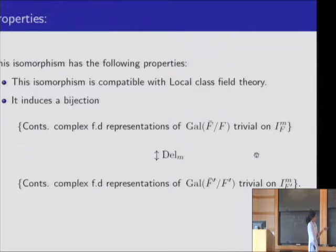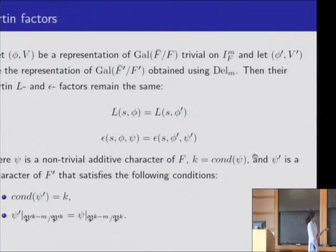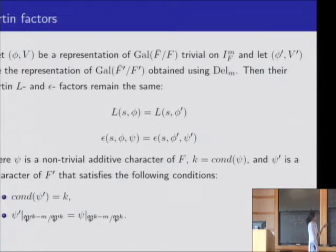Moreover, this isomorphism induces a bijection between the complex finite-dimensional representations of the Galois group trivial on I_F^M and the corresponding objects over F prime. We have L and epsilon factors associated to such representations. If phi_V is a representation of the Galois group trivial on I_F^M and we get a representation phi prime V prime using the Deligne isomorphism, then the L and epsilon factors are the same. In the epsilon factors, there is an additive character involved, and the characters have to be chosen in a compatible manner.